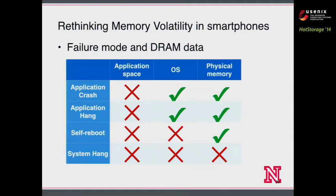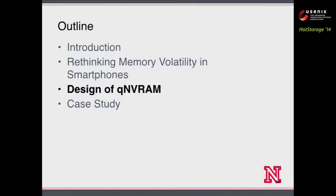This table summarizes what happens to memory data when failure occurs. When the application fails, we lose data in the application's memory space. When the system reboots, we lose everything in the virtual memory system, but data in physical memory is still there. When the system freezes, we basically lose everything. Based on these insights, we propose a new design of non-volatile RAM in smartphones: the quasi-non-volatile RAM.